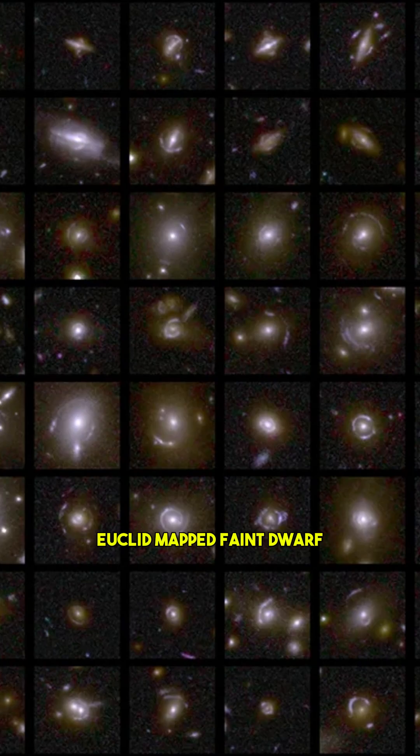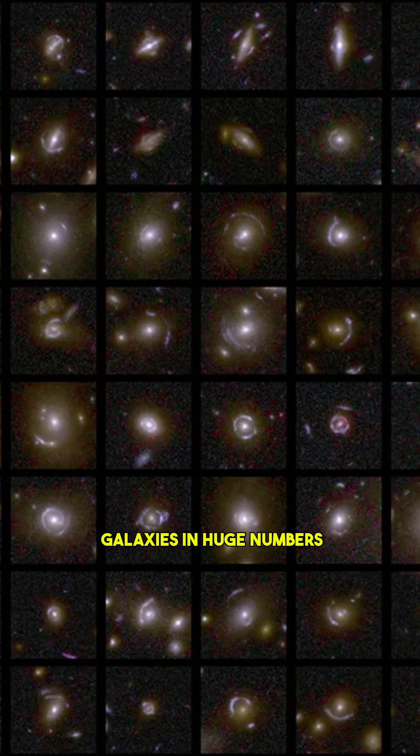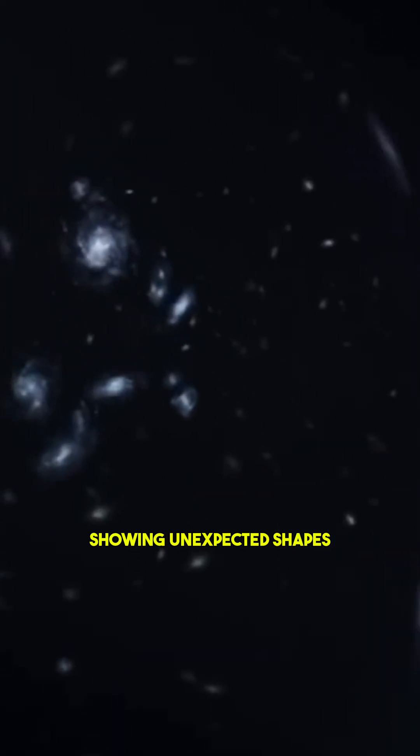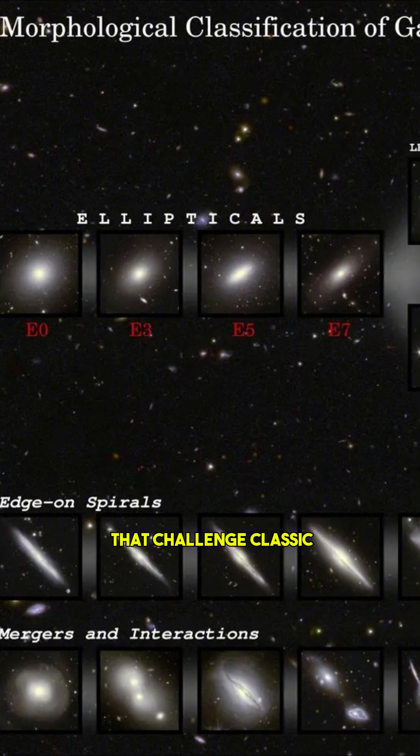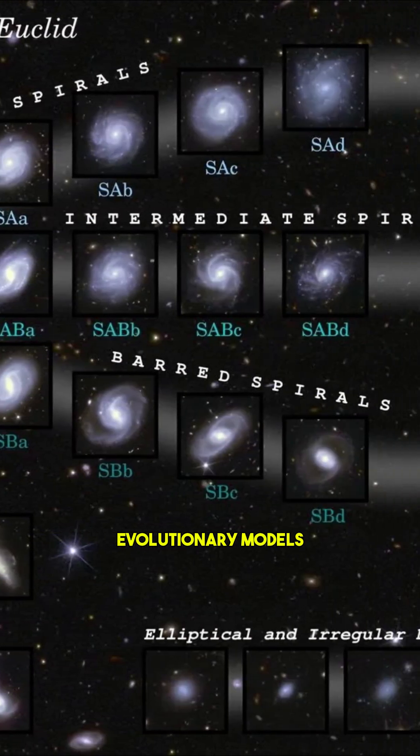And for the first time at this scale, Euclid mapped faint dwarf galaxies in huge numbers, showing unexpected shapes and structures that challenge classic evolutionary models.